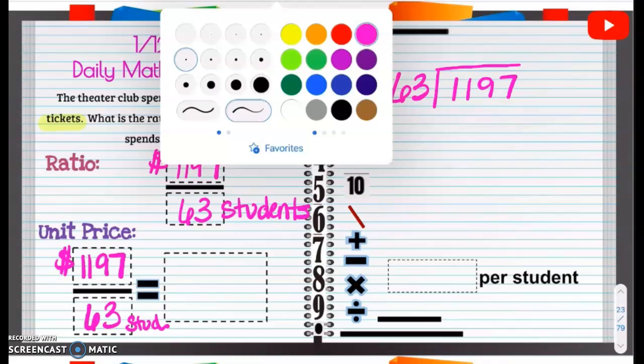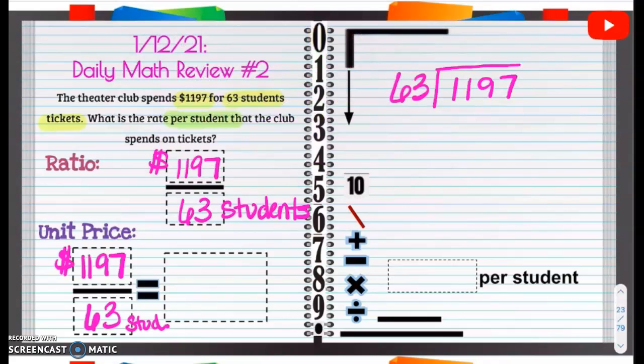Now, 63 cannot go into 1. 63 cannot go into 11. So, what about 119? Let's try 63 times 2 and see what that gives us. 3 times 2 is going to be 6. 2 times 6 is going to be 12. 126, that's too many. So, it can only go in one time. That's kind of crazy.